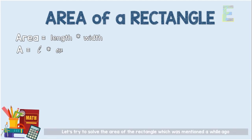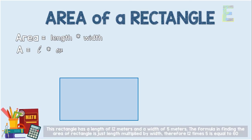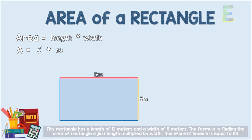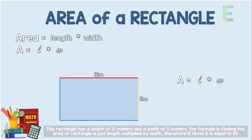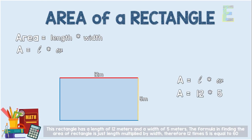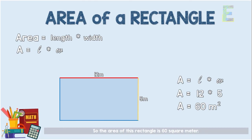Let's try to solve the area of the rectangle mentioned earlier. This rectangle has a length of 12 meters and a width of 5 meters. The formula for finding the area of a rectangle is just length multiplied by width. Therefore, 12 times 5 is equal to 60. So the area of this rectangle is 60 square meters.